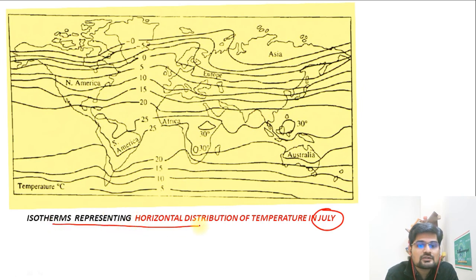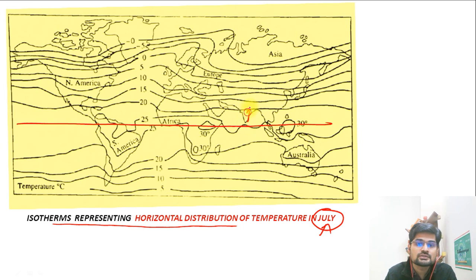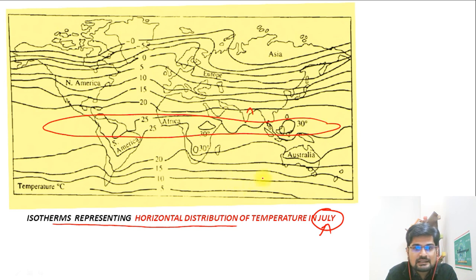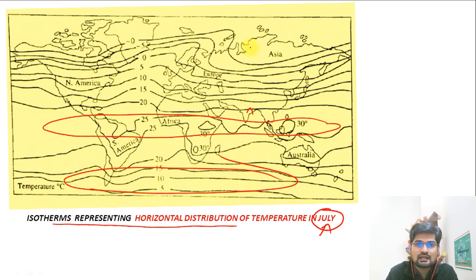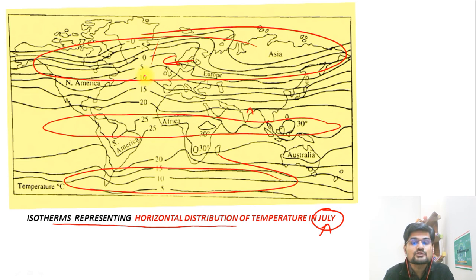Observing the isotherm representing horizontal distribution of temperatures in July: the sun is overhead near the Tropic of Cancer, so this area has surface temperatures close to 30°C while other areas have lesser temperatures. Surface temperatures differ in different seasons, and we map them through isotherms.